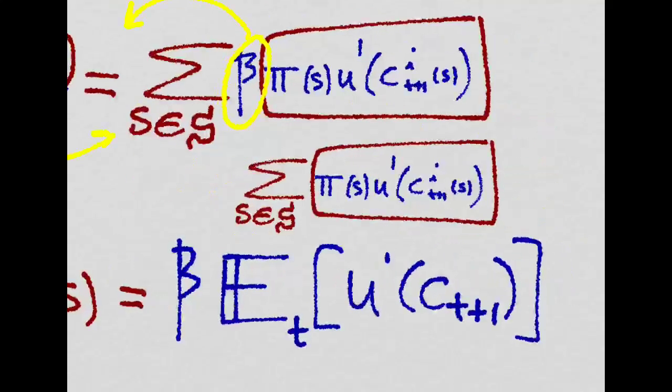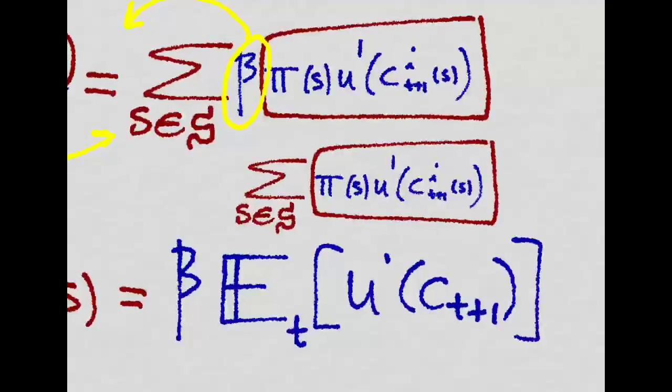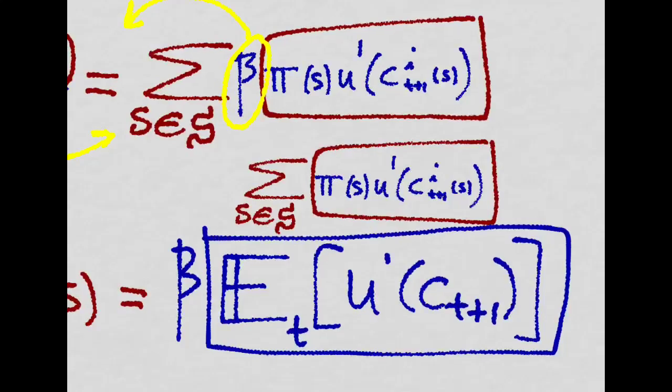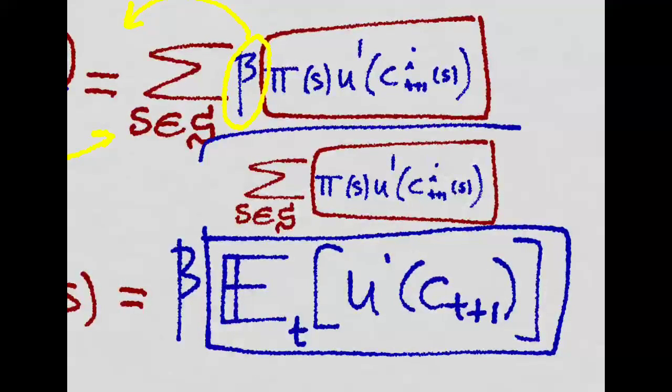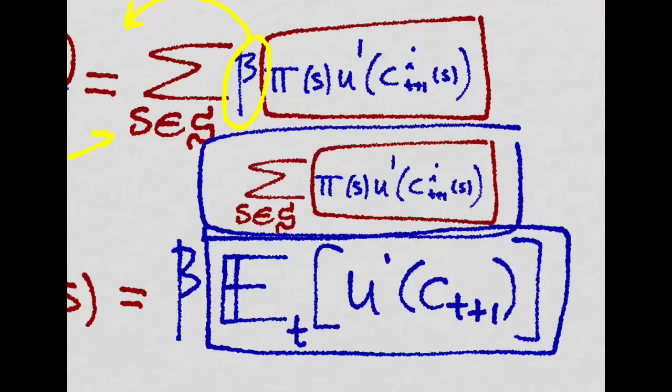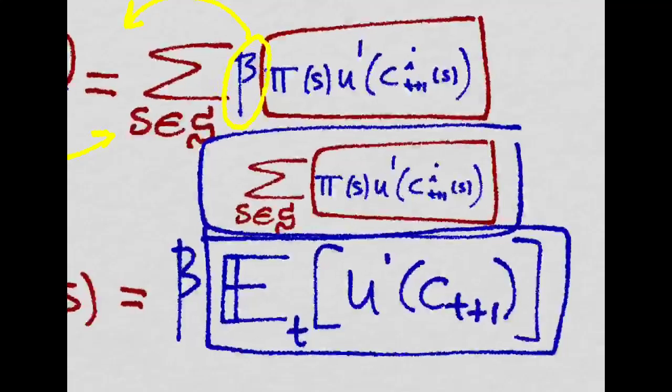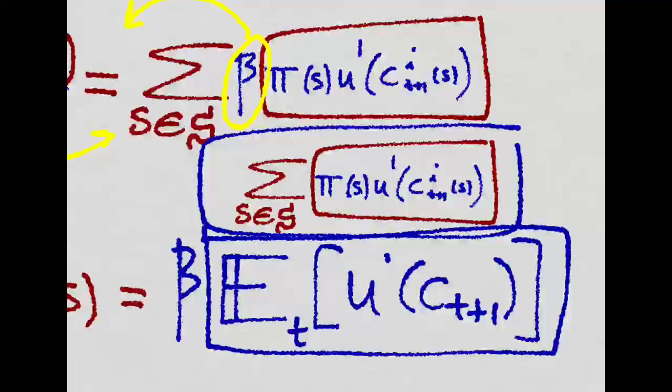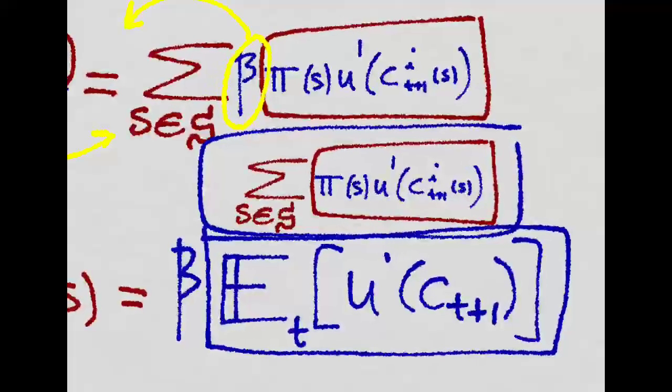And remember, we had actually defined the expected utility that a consumer would get at T plus 1 as the sum of the marginal utilities in different states multiplied by the probability that that actual state is realized, which is pi of S.